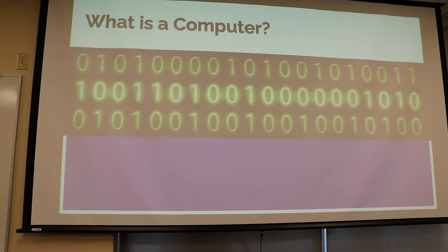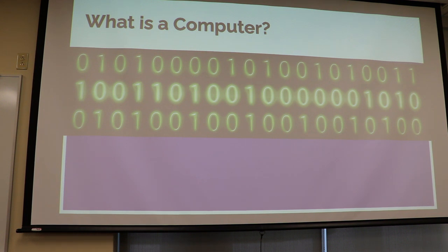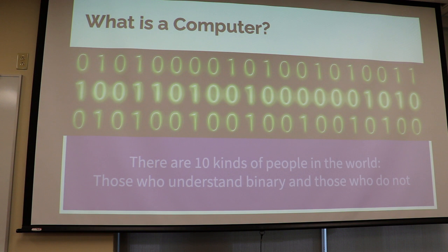The first thing I like to tell people when I talk about what a computer is: computers are really stupid. Computers only know on or off. They only know zero or one. That kind of informs the rest of how computers work. And so, I've got a joke here: there are ten kinds of people in the world — those who understand binary and those who do not.